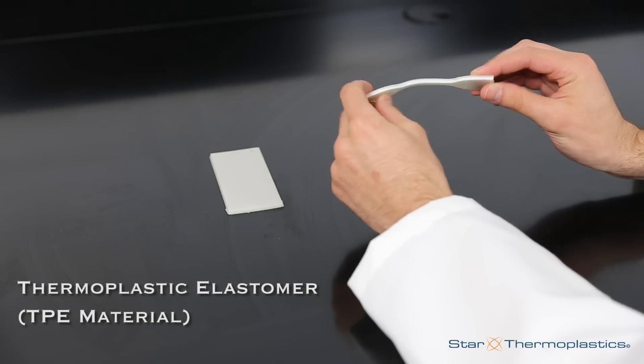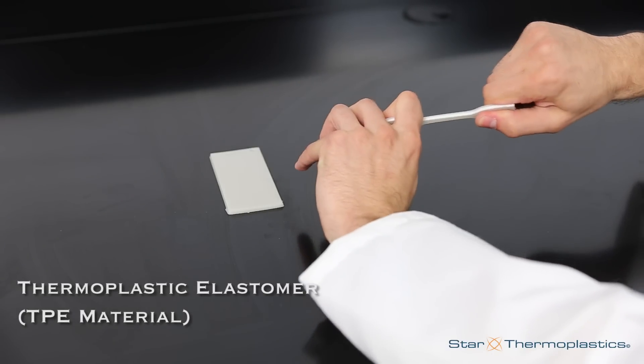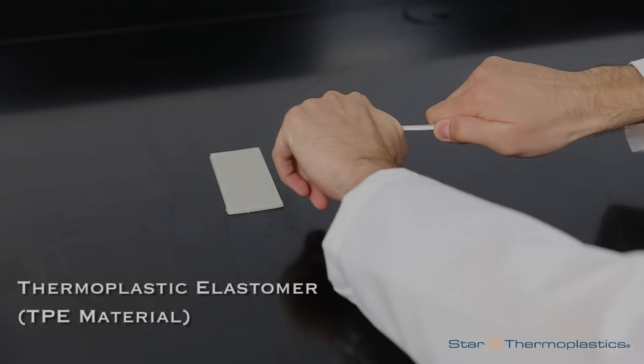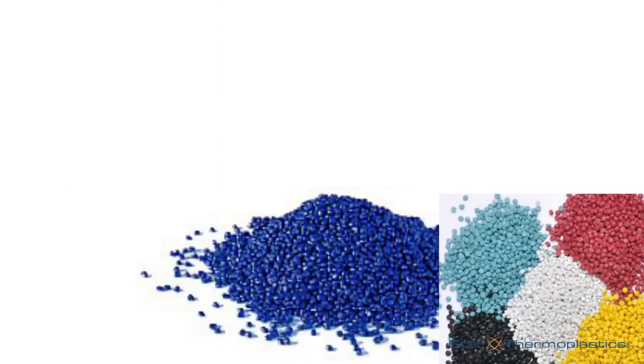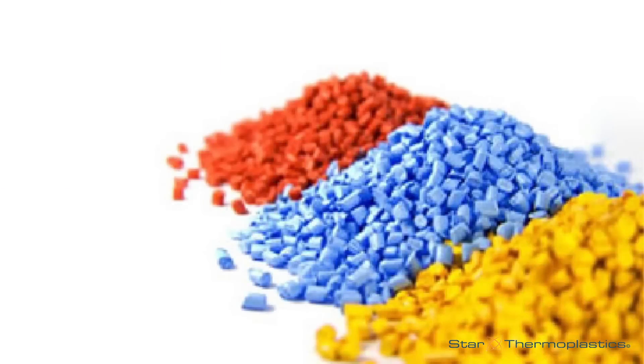Thermoplastic elastomer, or TPE material, has a much higher tensile strength and is not easily torn. By considering tensile strength, you can narrow down and specify the optimal TPE for your product design and use.